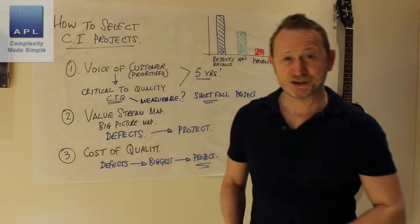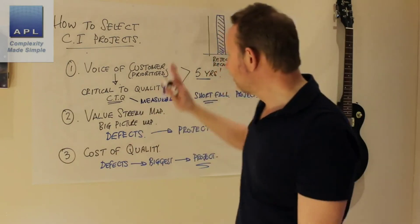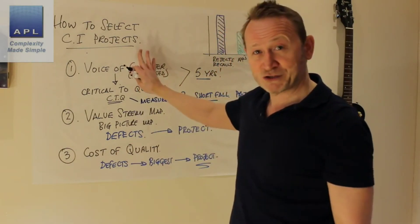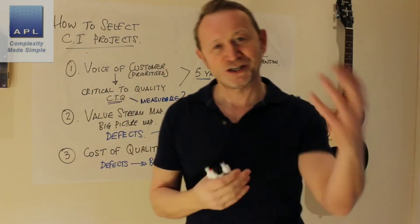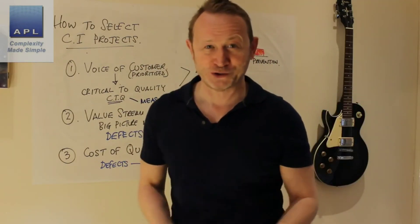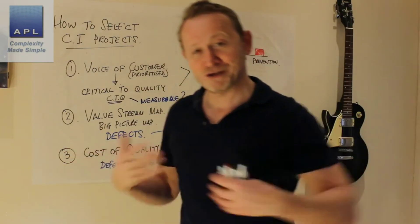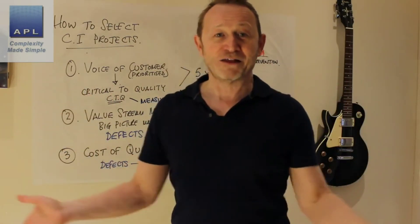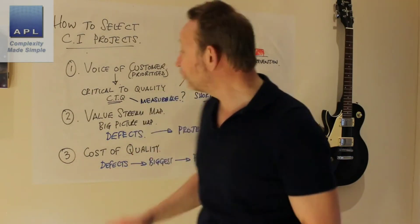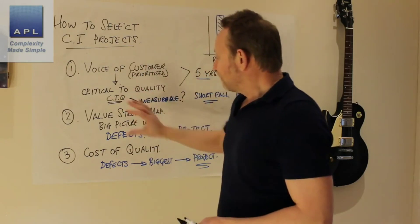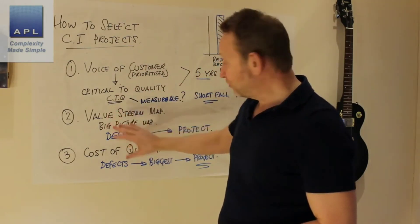The biggest cost item typically is going to be a project. And that really is how you select the projects. It's nice to do it the correct way — the voice of the customer method is how you should start the whole process of designing a new product or service right from the beginning. If you get a prioritized list from the customer, you will please the customer and get lots of very happy customers and make piles of cash.